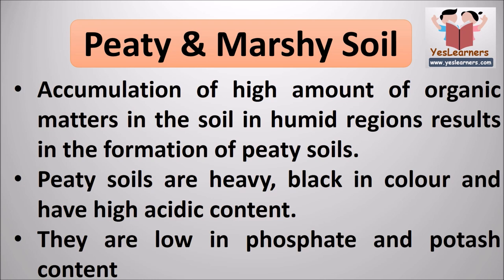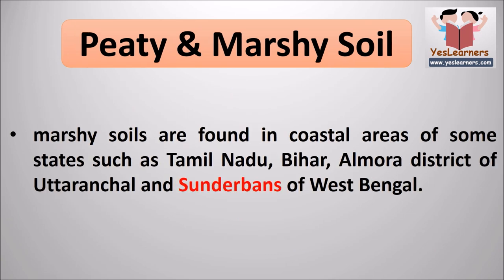Accumulation of a high amount of organic matter in the soil in humid regions results in the formation of peaty soils. These soils constitute about 10–40% organic matter and also a reasonable amount of soluble salts. Peaty soils are heavy, black in color and have high acidic content. They are low in phosphate and potash content. Peaty and marshy soils are found in a few districts of Kerala, while marshy soils are found in coastal areas of Tamil Nadu, Bihar, Almora district of Uttarakhand and Sundarbans of West Bengal.